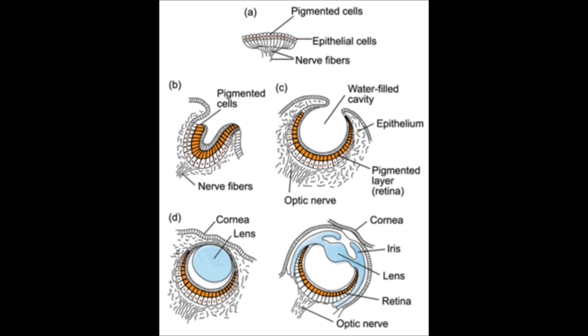At the point where the neural ectoderm meets the surface ectoderm, the latter thickens to form the lens plate, invaginates to form the lens vesicle, and then separates to form the lens.